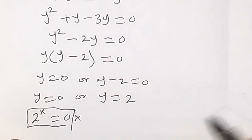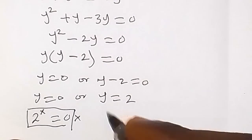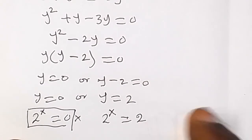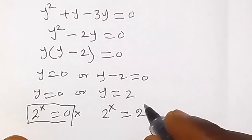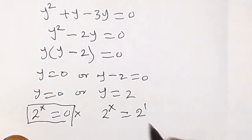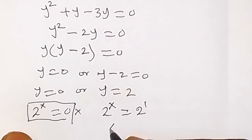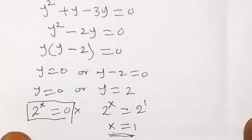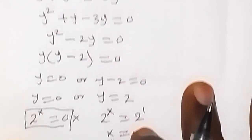For this one, we have y, 2 raised to power x equals to 2, and the 2 is also 2 raised to power 1. So we can say that the base here are equal, and therefore we equate the power, then x is equal to 1.